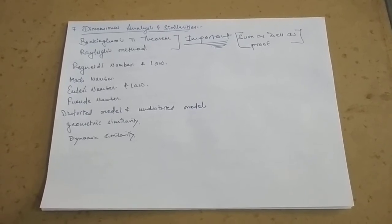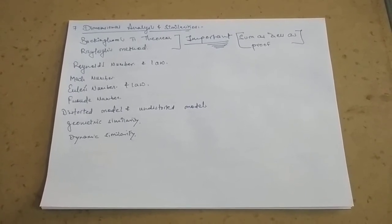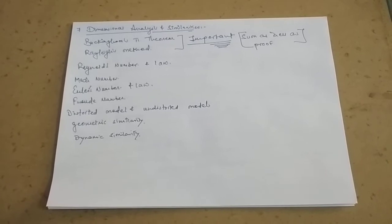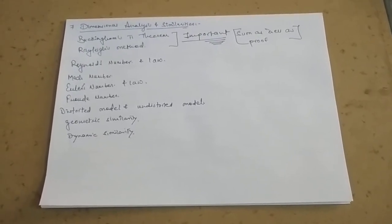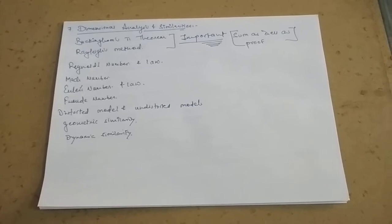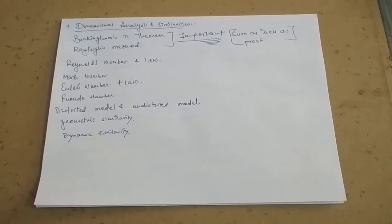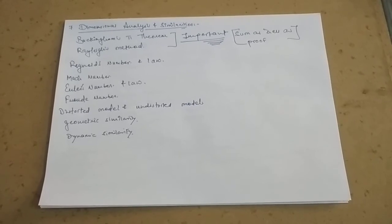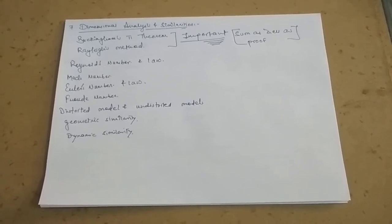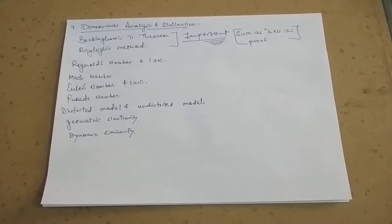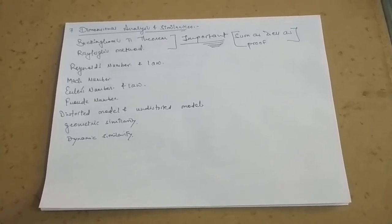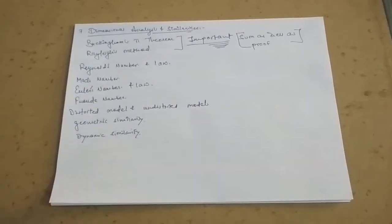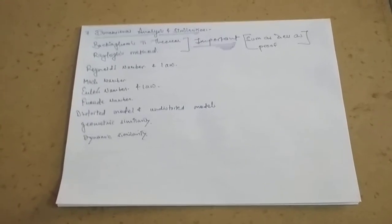Seventh chapter is Dimensional Analysis and Similarities. Buckingham's pi theorem and Rayleigh's method, very important. Anyone will be asked definitely, either derivation, either proof, either sum. You cannot miss this. Reynolds number, Mach number, Euler's number, Froude number, that can be asked in four marks or seven marks for definitions. Geometric similarity, dynamic similarity. This is important.